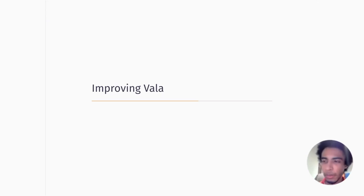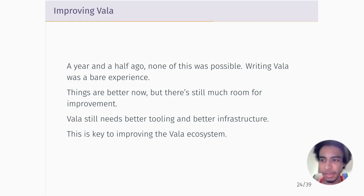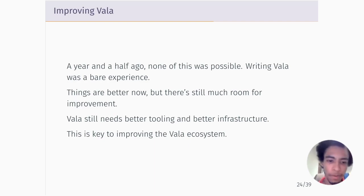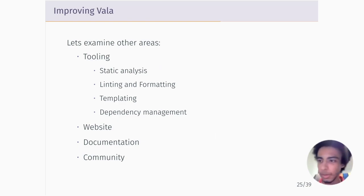Now I'm going to talk more about how to improve Vala in general as an ecosystem. When we look at the ecosystem from a year and a half ago, you didn't really have much. I think the addition of this language server has improved things, but there's still a lot of room for improvement in the infrastructure. Things we can improve include: tooling — more types of tools; improving the website; documentation; and community spaces.